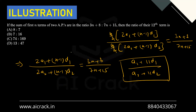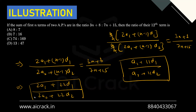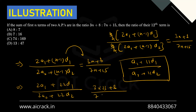To find the ratio of 12th terms, substitute n = 23 into the sum ratio formula. This gives [2a1 + 22d1] / [2a2 + 22d2], which simplifies by dividing numerator and denominator by 2 to (a1 + 11d1) / (a2 + 11d2). Substituting n = 23 on the right: (3×23 + 8) / (7×23 + 15) = 77/176. This is the ratio of the 12th terms.